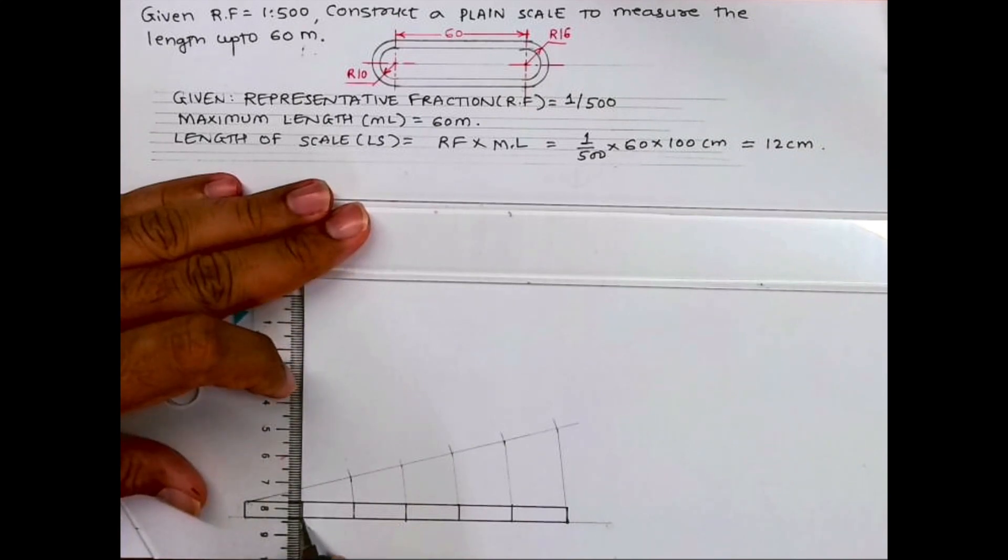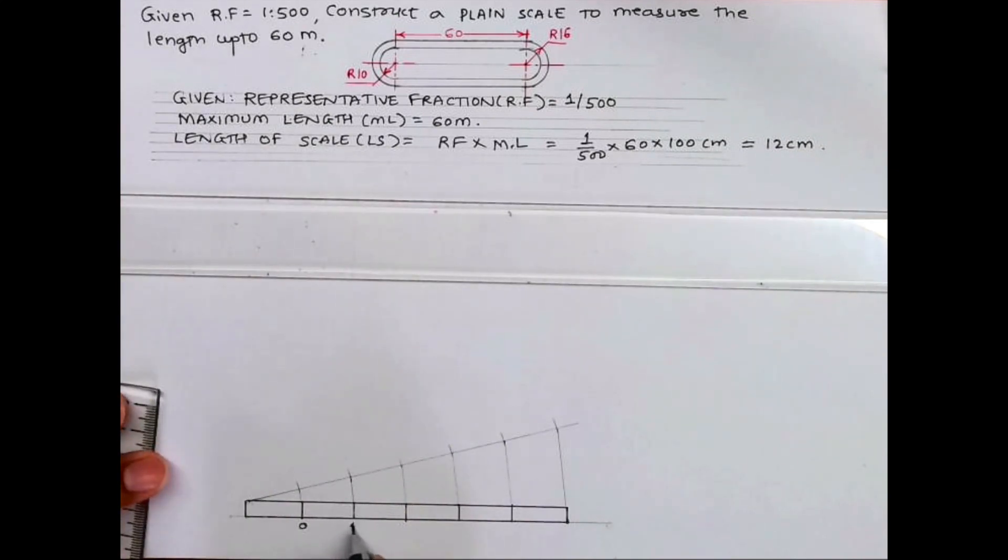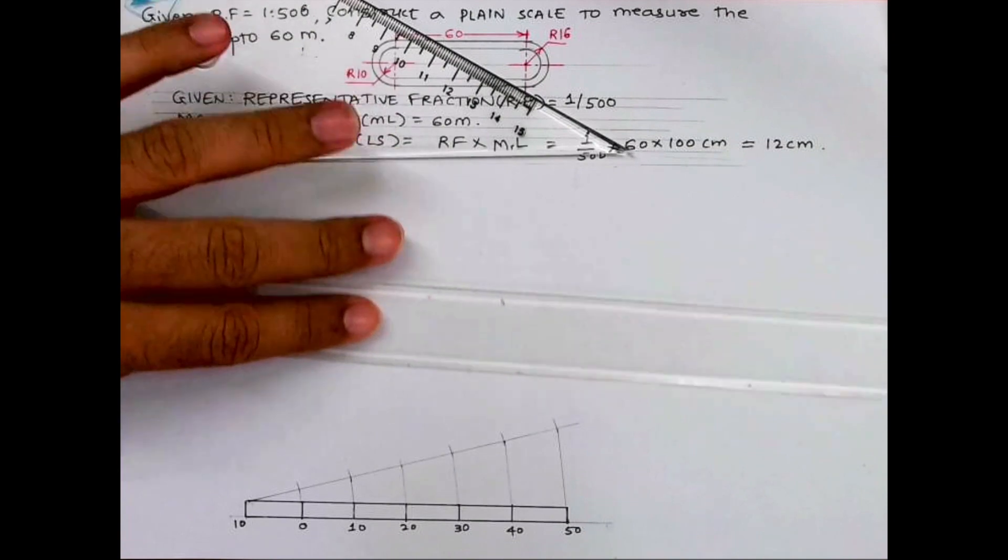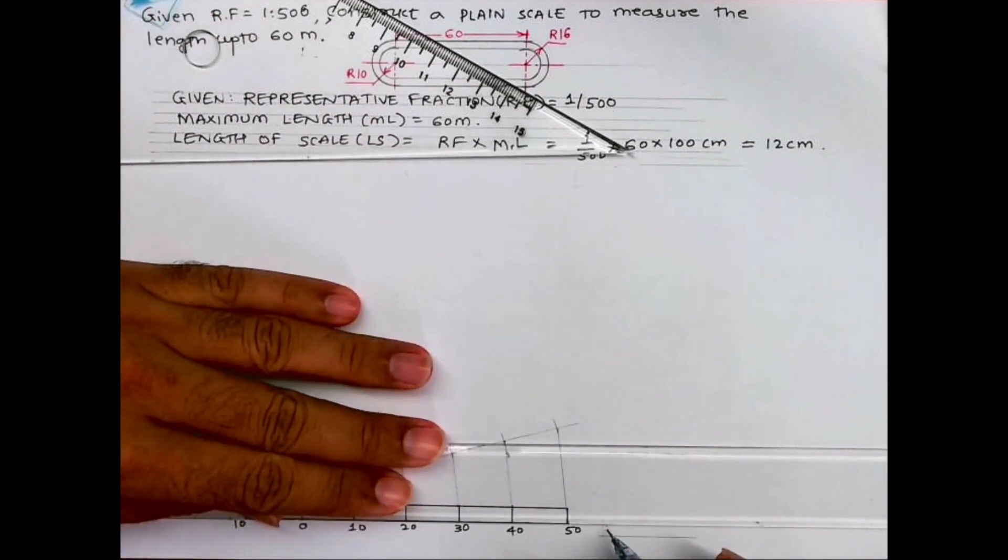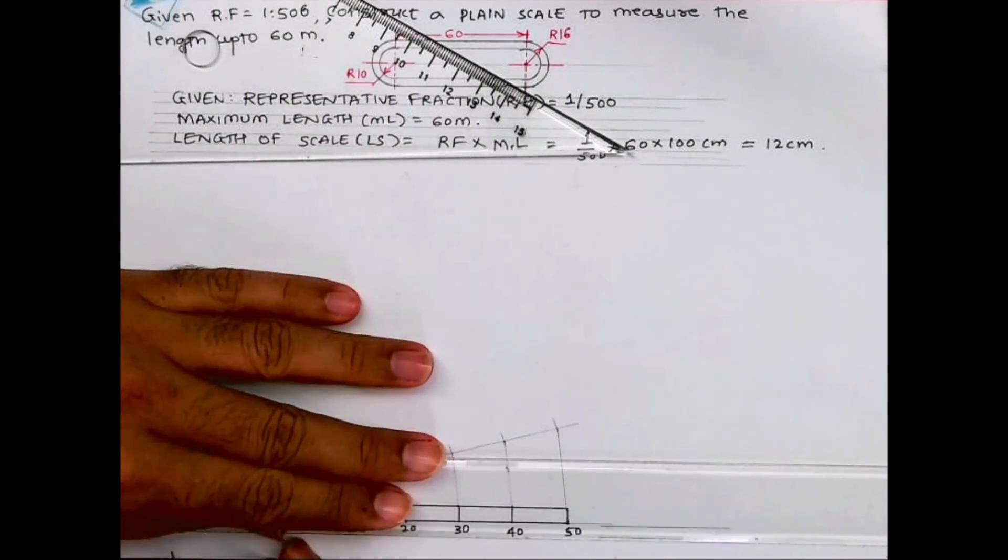60 divided by 6 gives us 10 meters each: 0, 10, 20, 30, 40, and 50 meters, and here also 10 meters. Both sides will write 'meter' and we'll write RF in the middle.